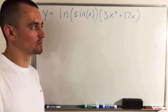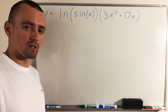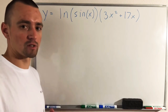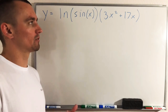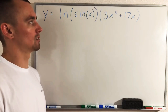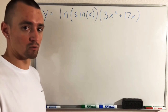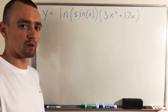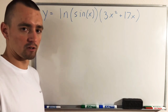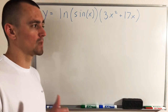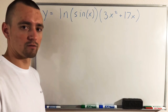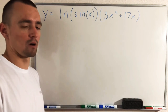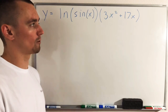Hey guys, Jake here coming at you with another math problem today. The last couple videos I've talked about chain rule versus product rule, and today I want to show you how to combine those and use both of them to find the derivative of a single function. I'll also be referencing how this is explained in the book 'The Calculus Lifesaver' by Adrian Banner — a great book to help explain calculus topics, and there's an affordable copy linked in the description.